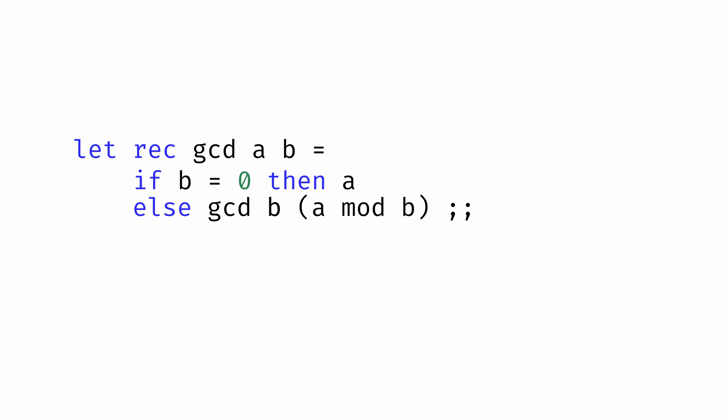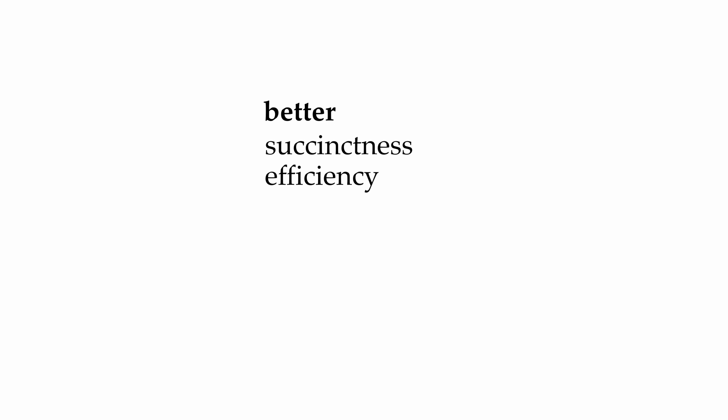So what's the lesson here? The key takeaway is that there is more than one way to solve a problem, and some ways are better than others. What does better mean? A program might be better because it's more succinct, more efficient, more readable, more maintainable, more provable, more testable, and ultimately more beautiful.